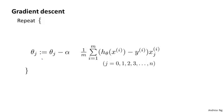Previously, we were using gradient descent for the original cost function without the regularization term. We would repeatedly update the parameters theta j as follows for j equals 0, 1, 2, up through n.